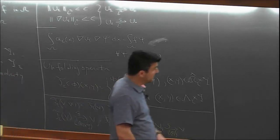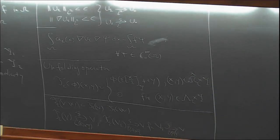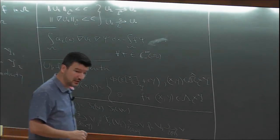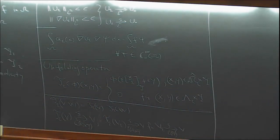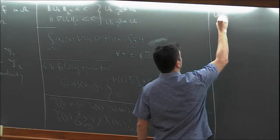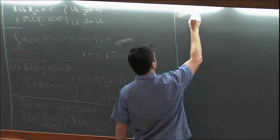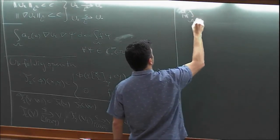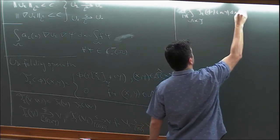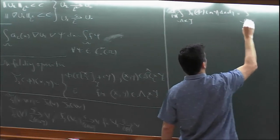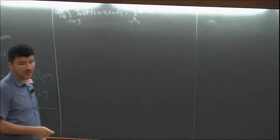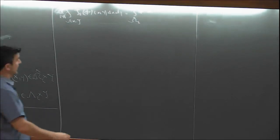This is a recap, so I put it here because I consider that you've seen it before. The main thing was the unfolding identity, which helps us take integrals on Ω and unfold them into integrals on Ω × Y. Specifically, the integral of the unfolded function equals the integral on the interior set of the original function.